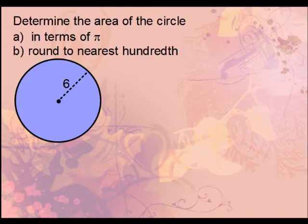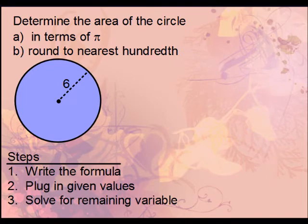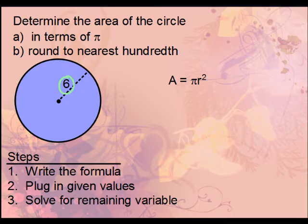Let's do an example: determine the area of this circle in terms of pi, and also round the answer to the nearest hundredth. These are the steps to use whenever determining the area of any circle or polygon. First, write the formula. Then plug in the given values — in this case the radius is 6, so we plug 6 in for r.